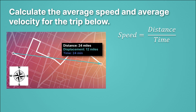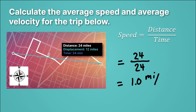Now let's calculate speed. For speed, we take the distance, which is 24 miles, and divide it by our time, which is also 24 minutes. 24 divided by 24 gives us 1.0 miles per minute. Our units are the same as we saw for velocity, because our distance is in miles and our time is in minutes. That's 1 mile per minute, which is exactly the same as 60 miles per hour, because there are 60 minutes in an hour. So the speed of this trip was 1 mile per minute.